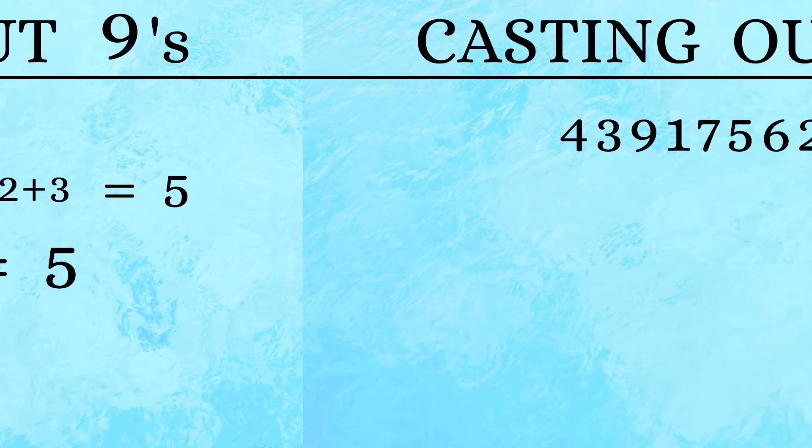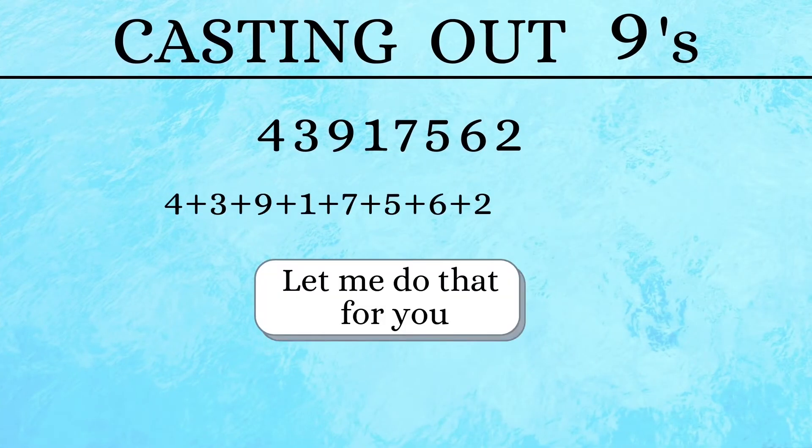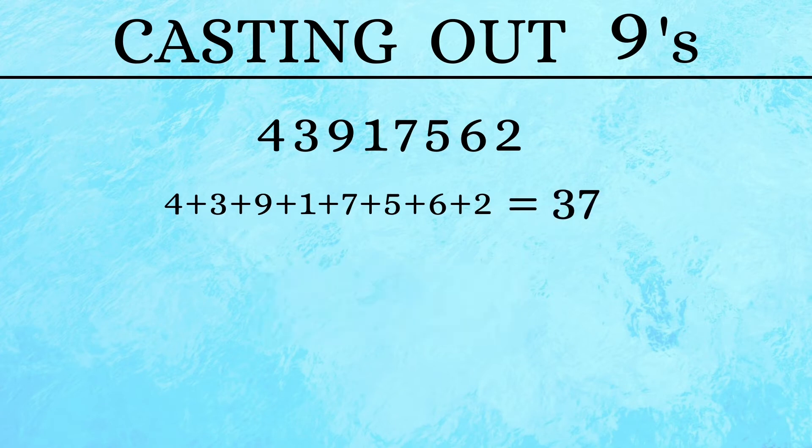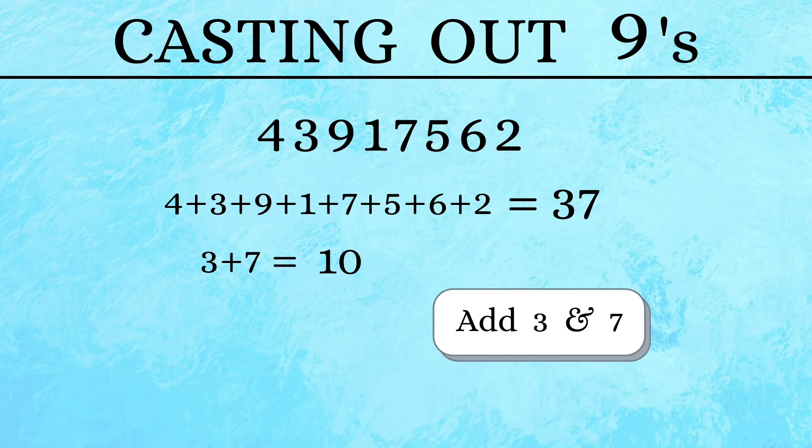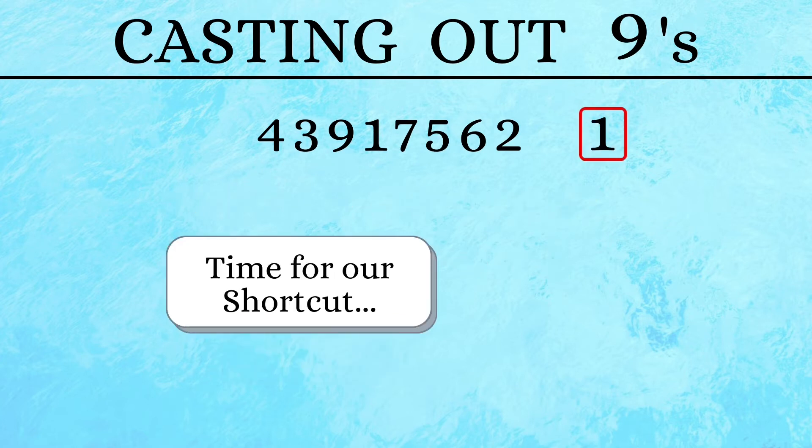Now let us check this out with an even larger number. Adding up all these digits gives us 37. We then add 3 and 7 together to get 10, and then add 1 and 0 to get a 1. But we could do all of these in a single step by casting out the nines.